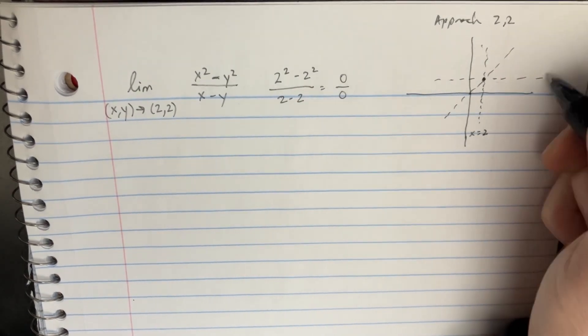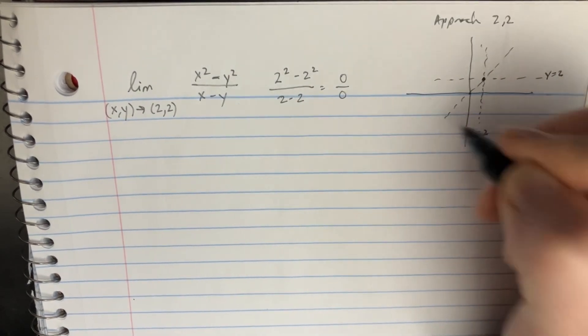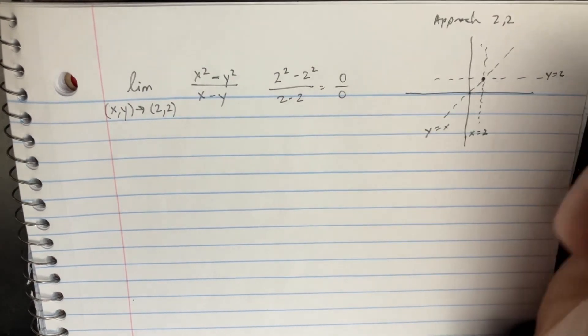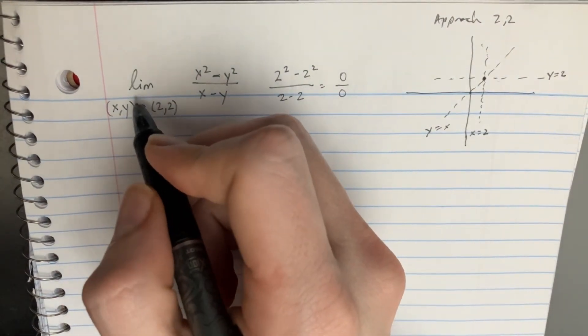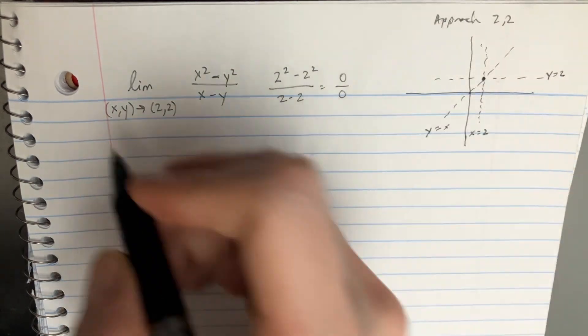This line is x equals 2, this line is y equals 2, and this line is y equals x. So now we try to solve the limit by approaching that point from a couple different lines.